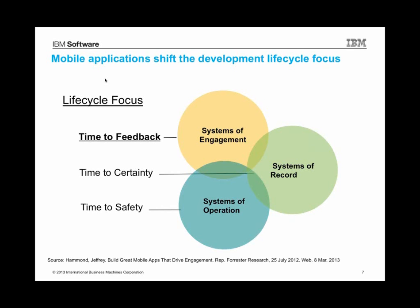First are systems of operation — things like cars, trains, planes, buses, automobiles. If you're building software for those kinds of operational systems, what you're mainly concerned about in your life cycle is how fast can you get to safety. How early and often can you assure that the train, plane, and car software you're creating is safe and will keep the operators safe and have a great experience.